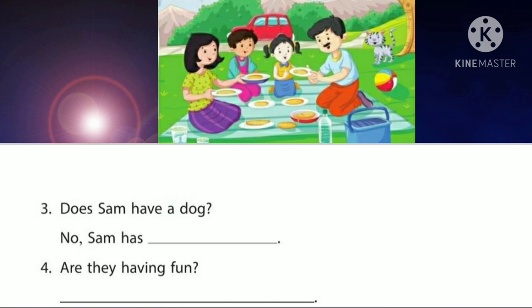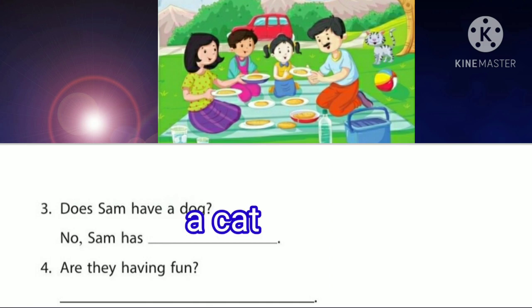Next, page number 7, third question: does Sam have a dog? Look at the picture carefully — can you see a dog there? No, there is no dog, but another animal is there. What is that animal? A cat. You can see a cat near the ball. So we write: No, Sam has a cat. All of you write: a cat — A-C-A-T.